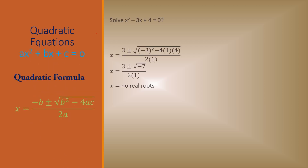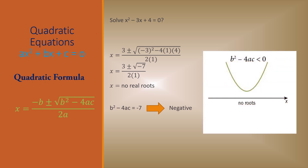Let's do one more example using the quadratic formula: x squared minus 3x plus 4. Plug in the values. This time inside the square root we have negative 7. We know that we cannot find the square root of a negative number. So whenever the discriminant value is negative, this means our curve is not intersecting the x-axis — that is, we don't have any root.